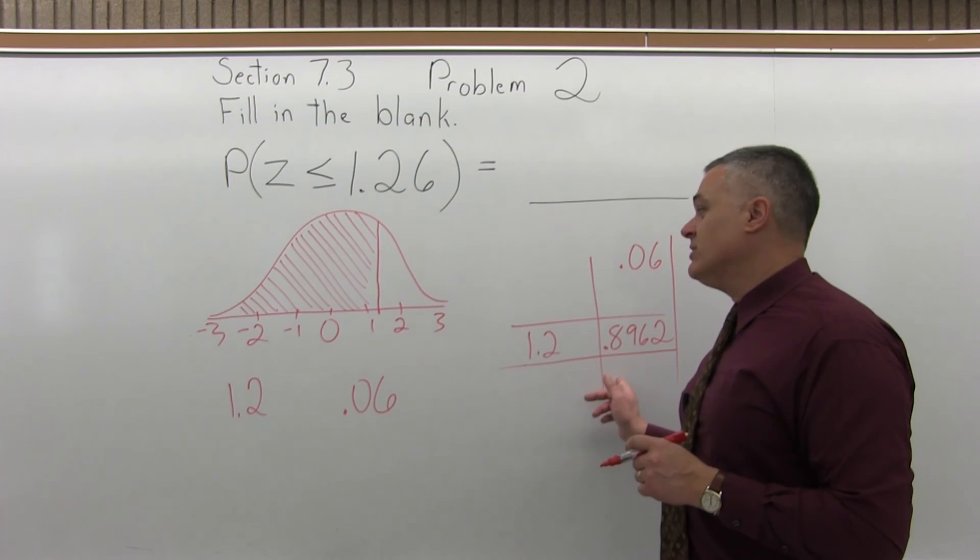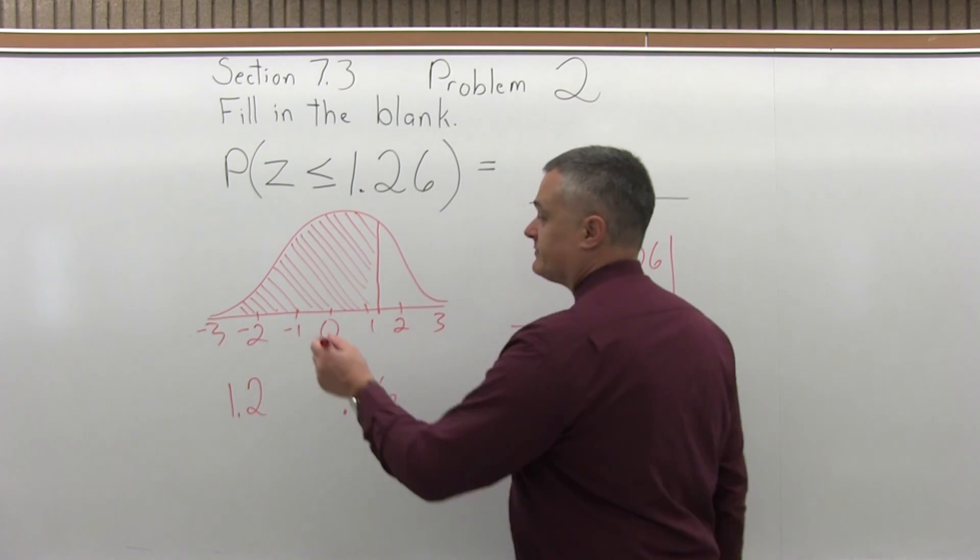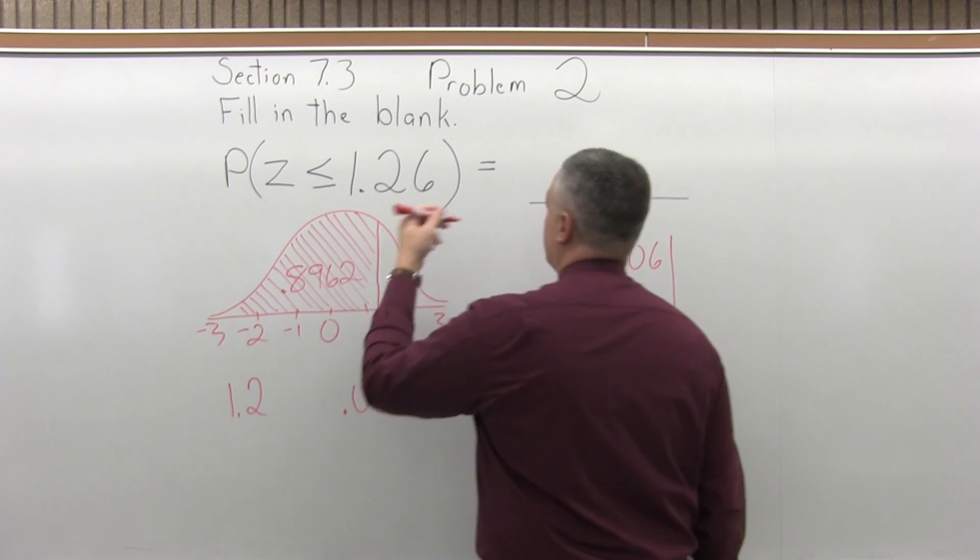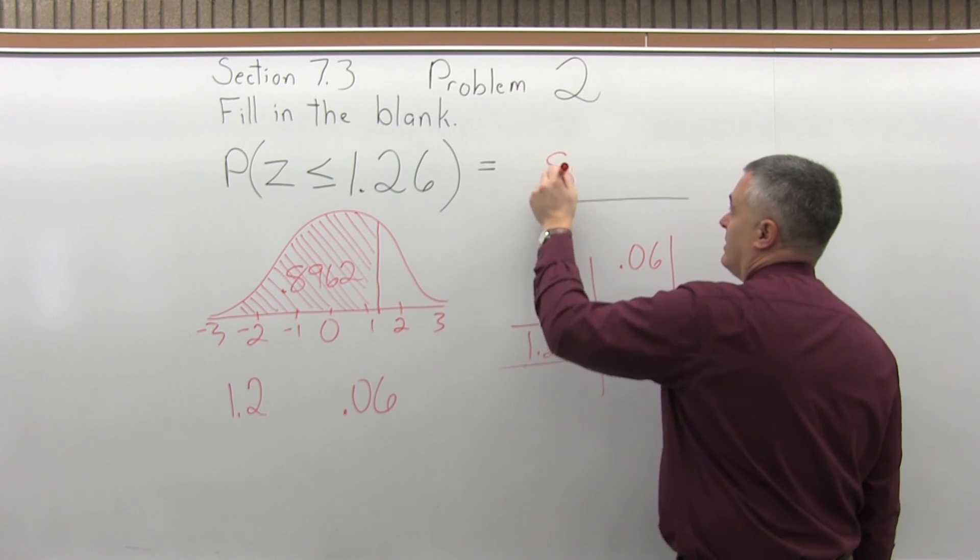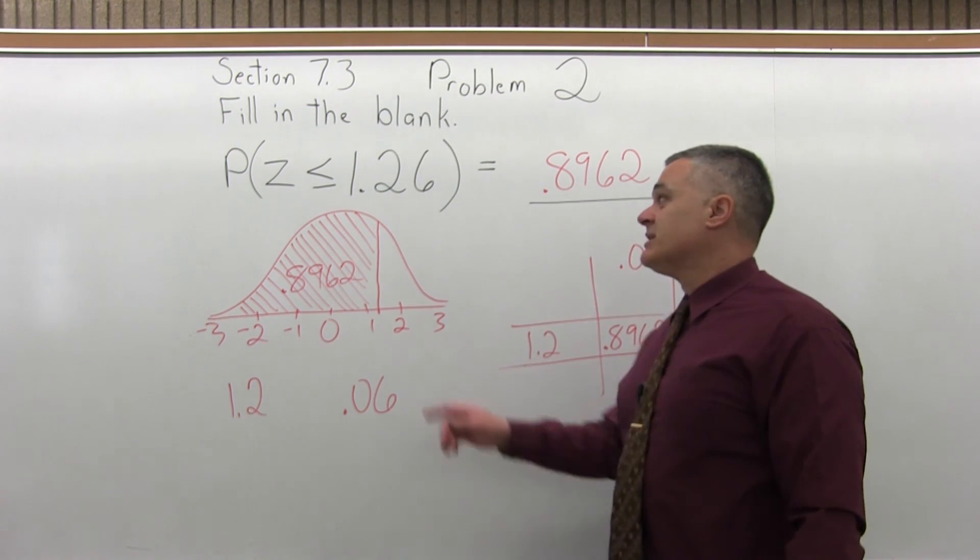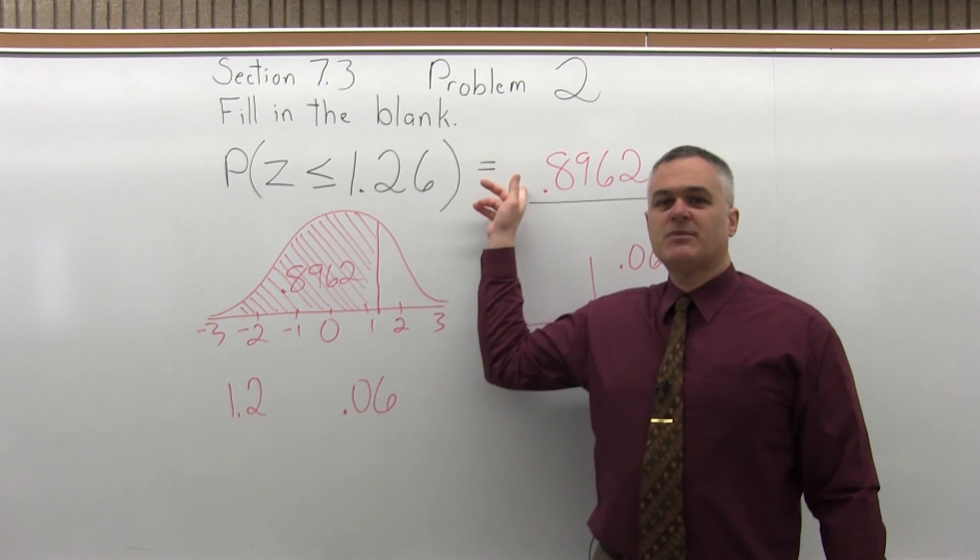So the chart that we use is set up to tell us the area to the left of what we looked up. So the area we're looking for is .8962. So that's what goes in the blank, .8962. So the probability that z is less than or equal to 1.26 is almost a 90% probability.